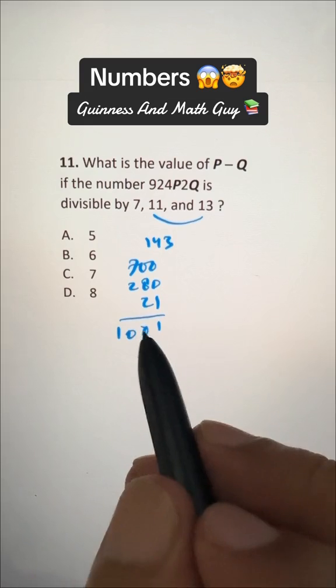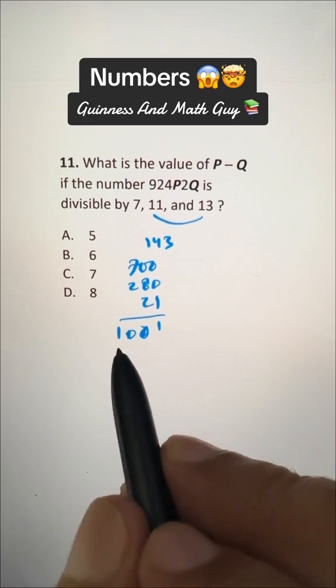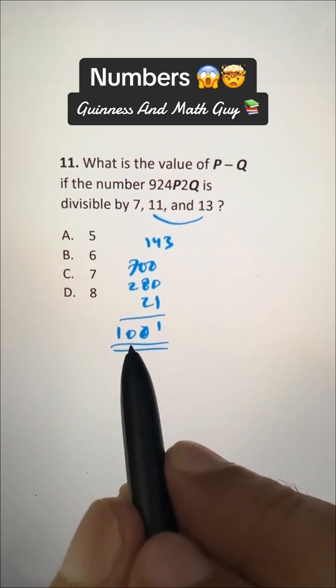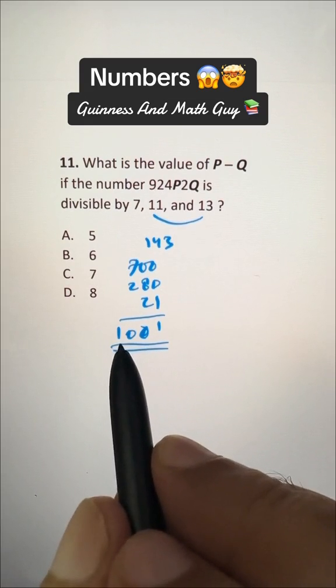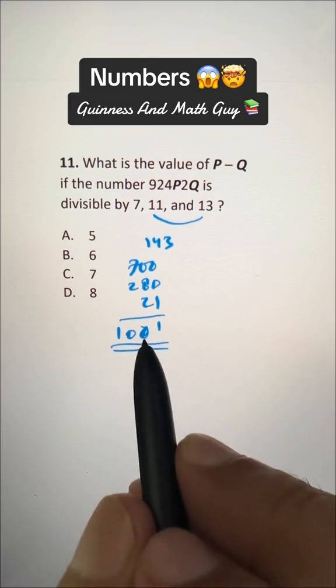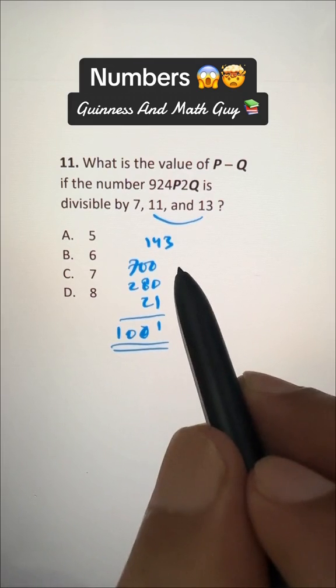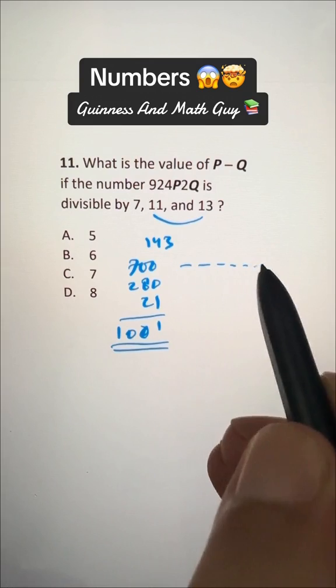Now, I have told in many of my videos, if you are dividing a number by 1001, or if you are multiplying by 1001 and the answer is a 6-digit number,